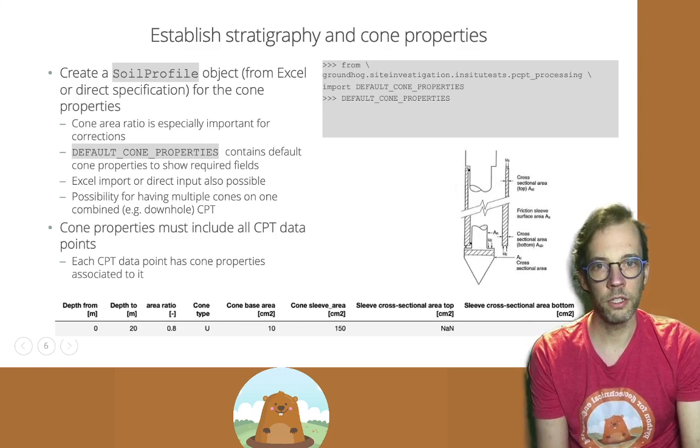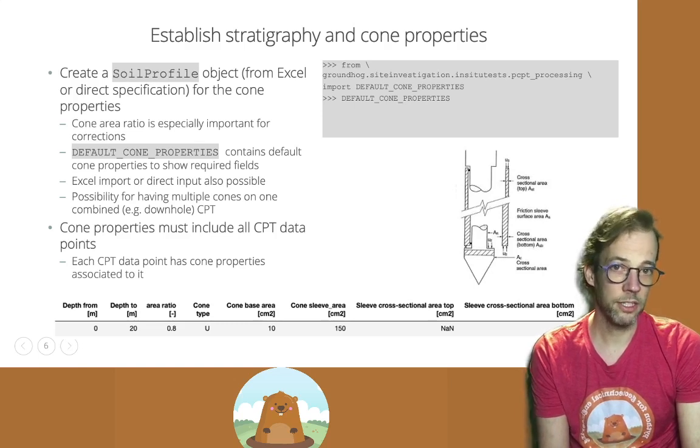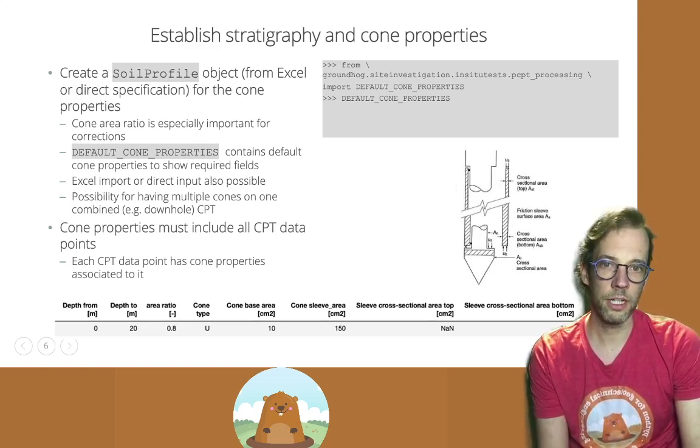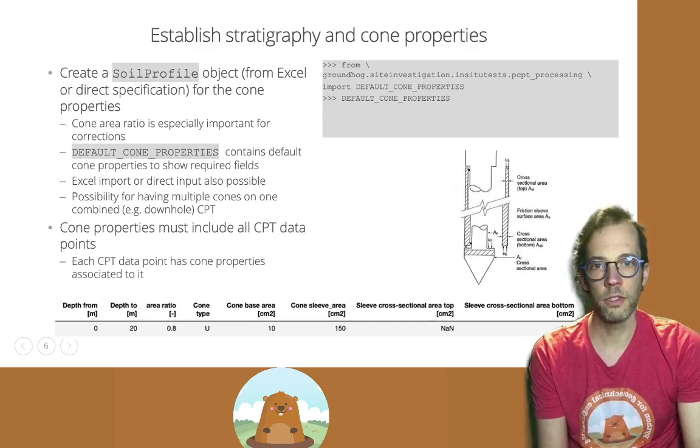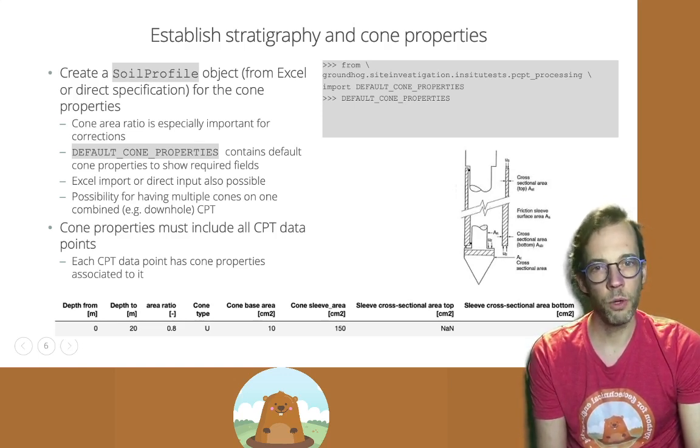The next thing we need to do is to let Groundhog know which CPT probe is used for each part of the investigation. Sometimes you have discontinuous CPTs, and in those discontinuous CPTs, the cone rod is replaced and you can have multiple properties.